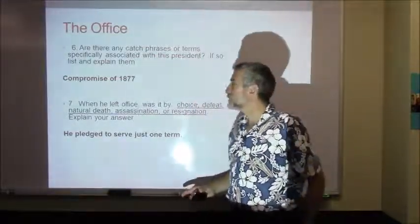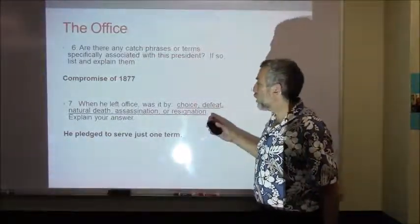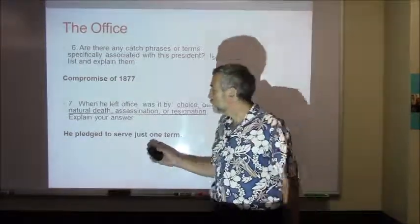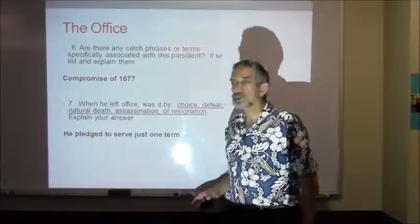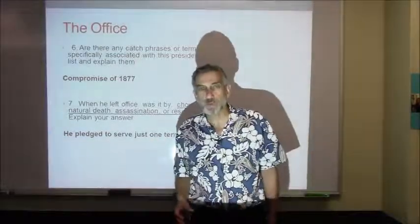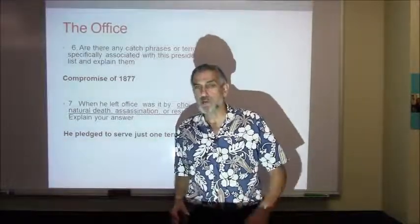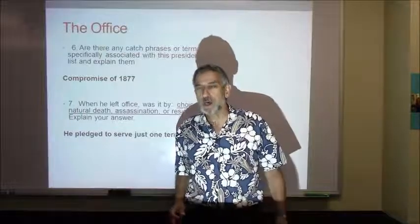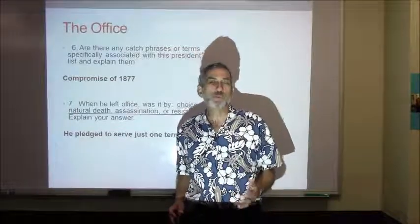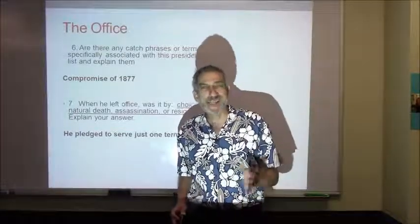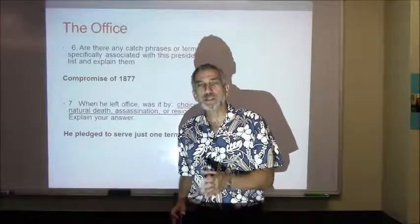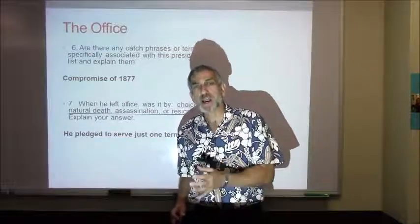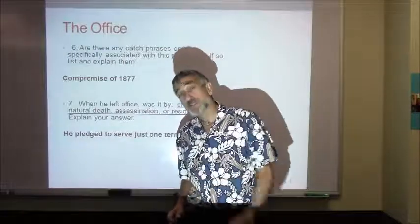Compromise of 1877. When he left office, he pledged to serve just one term. So now we're back to the series of one-term presidents. The problem with one-term presidents is they never really get to see their policies carried out long enough to see if they work.